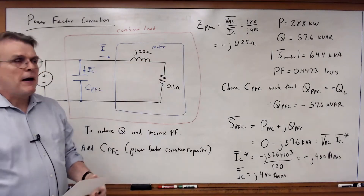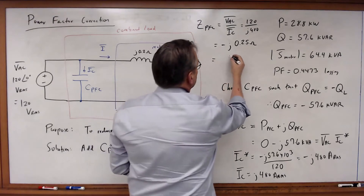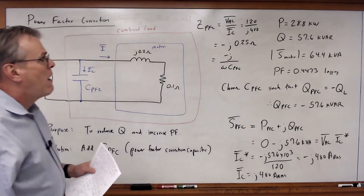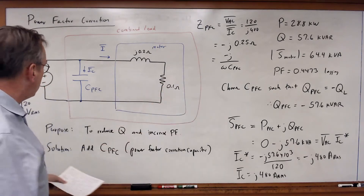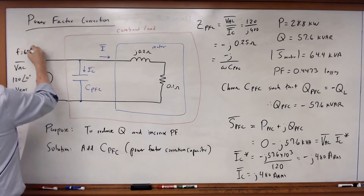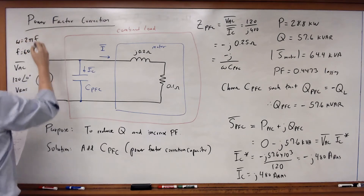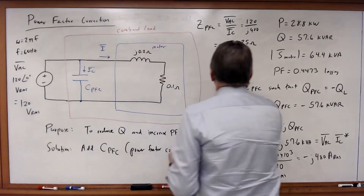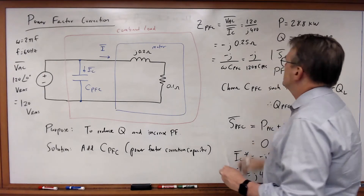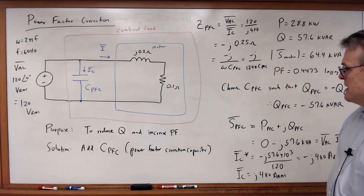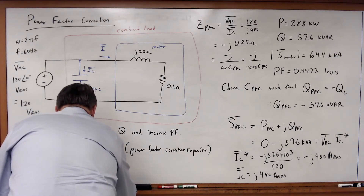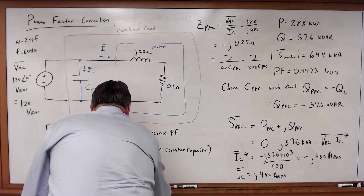From here I can calculate the capacitance, because I also know that Z_PFC must equal minus j over omega times C_PFC — the definition of impedance for a capacitor. In the United States, the frequency is 60 hertz, and omega equals 2 pi times f, so this equals minus j over 120 pi times C_PFC. Solving for C_PFC, I get that C_PFC equals 10.61 millifarads.